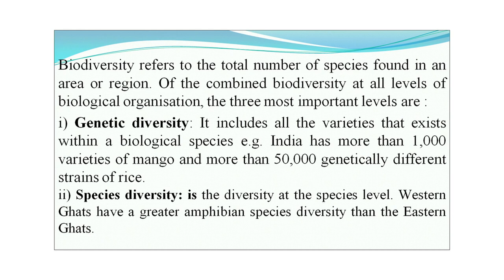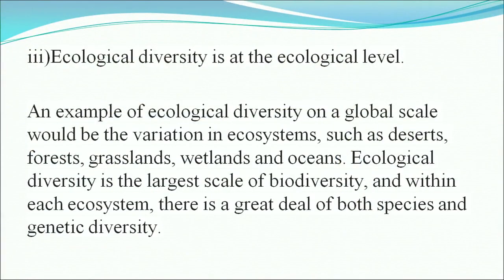Genetic diversity includes all the varieties that exist within a biological species. For example, India has more than 1,000 varieties of mango and more than 50,000 genetically different strains of rice. Species diversity is the diversity at the species level — for example, the Western Ghats have greater amphibian species diversity than the Eastern Ghats. Ecological diversity is at the ecological level; examples include variations in ecosystems such as deserts, forests, grasslands, wetlands, and oceans. Ecological diversity is the largest scale, and within each ecosystem there is a great deal of both species and genetic diversity.